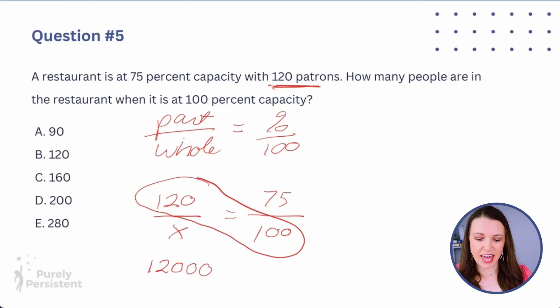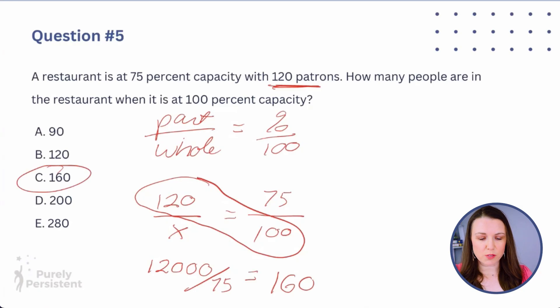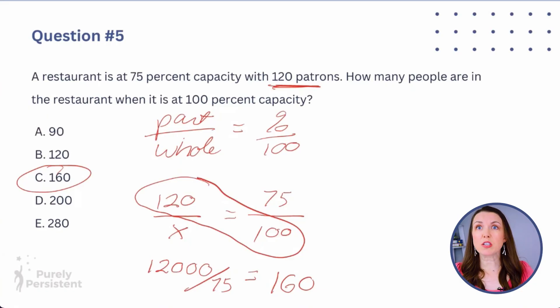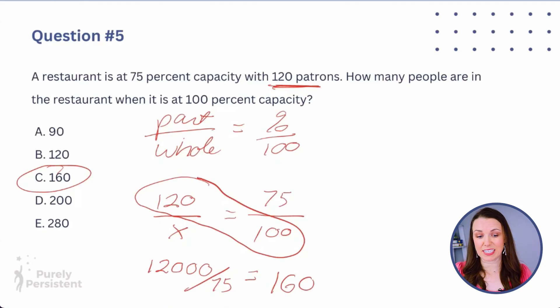So 120 × 100 = 12,000, divided by 75 = 160. The answer is 160. That makes sense — if 75% capacity is 120 people, then 100% capacity should be a little more. You can also use process of elimination: option A is less than 120 (too small), B is 120 (that's 75% capacity itself), D and E are way too big, so C = 160 is the only reasonable answer.